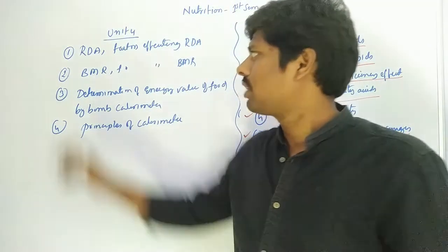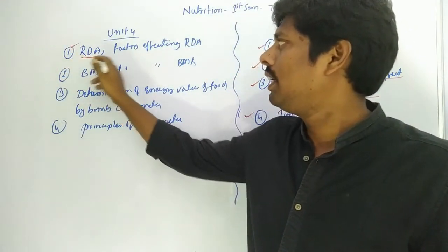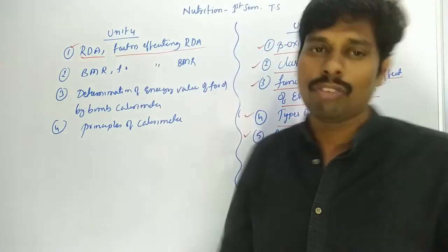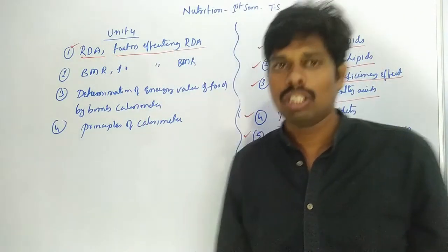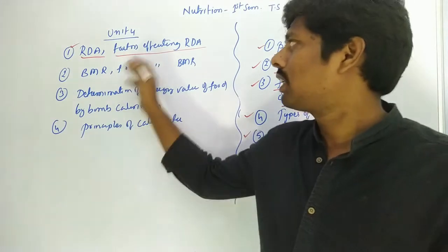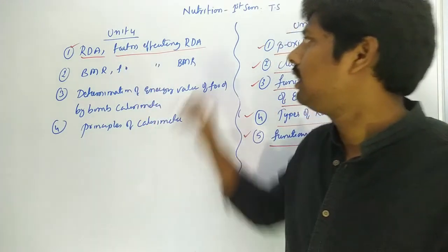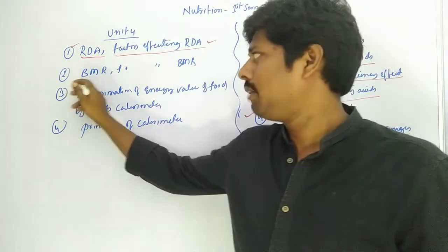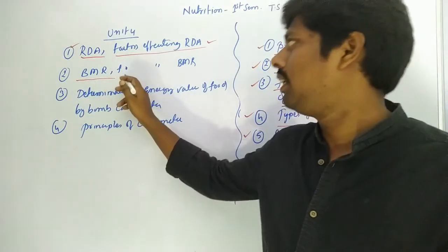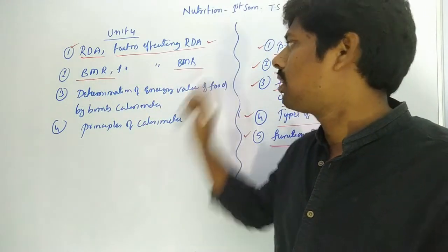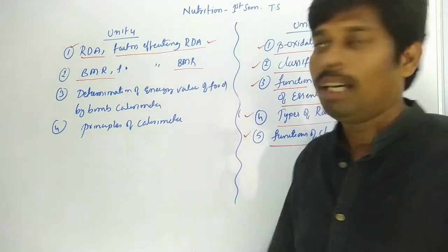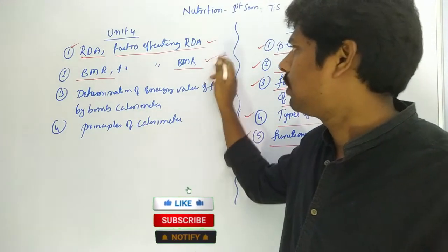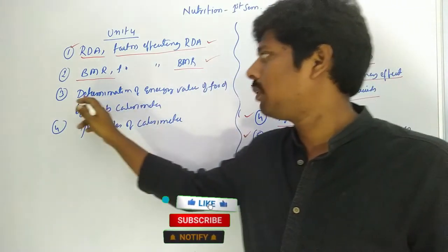Coming to unit 4: the first important question is RDA and the factors affecting RDA. The second question is BMR and the factors affecting BMR. BMR and the factors affecting BMR is the second important question.